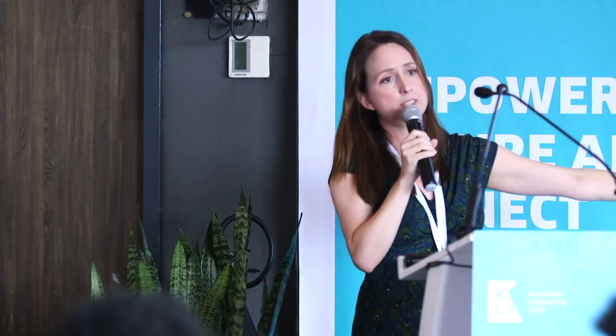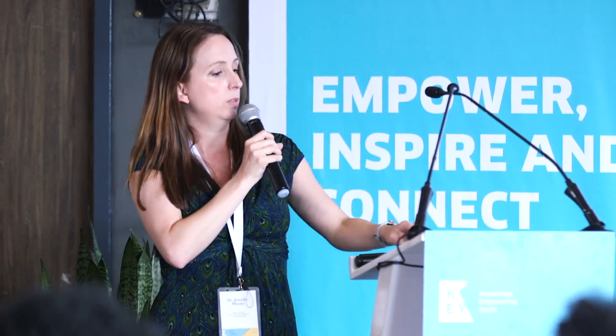Looking at the top skills in 2005 versus 2020: critical thinking jumped to number two, creativity to number three, cognitive flexibility appeared for the first time, and judgment and decision-making jumped up. All of these are skills students can develop through computational thinking — preparing them for the workforce, for success in school, and to address problems in their own lives.